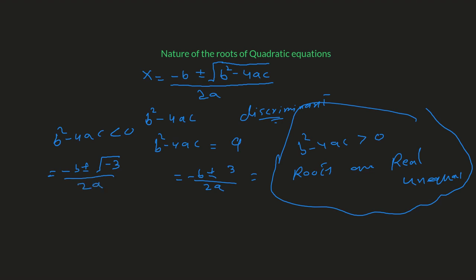With a and b as real numbers — say b equals 1 and a equals 2 — we have the square root of negative 3 under the radical. The square root of a negative number is a complex number; for example, the square root of negative 3 equals i times the square root of 3. So we get negative 1 plus or minus i√3, over 4. This means the roots are imaginary or complex.